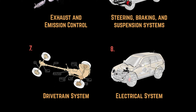Number eight: electrical systems. This generates and distributes electricity to electrical components all over the vehicle. It consists of smaller subsystems or smaller circuits, such as the ignition system, the starting system, charging system, and the lighting system.